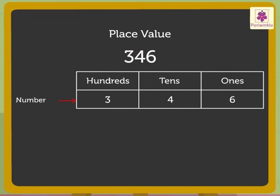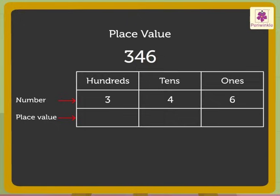Now, let us look at the place value of each digit. As the number 3 is in the hundreds column, it means that there are three hundreds. And so, its place value is 3 into 100. That is, three hundred.